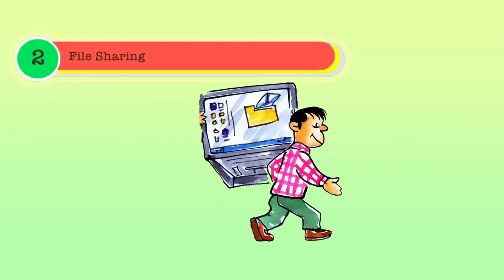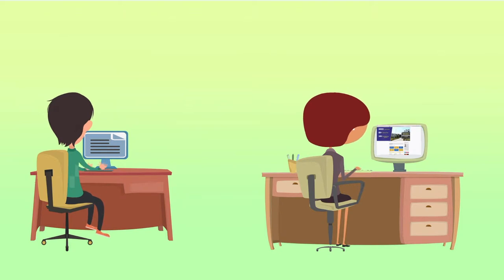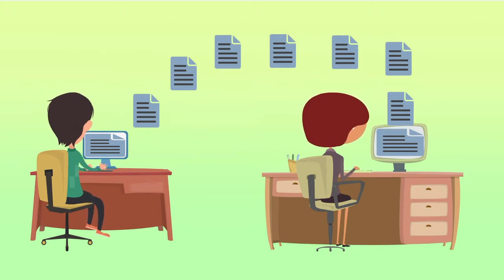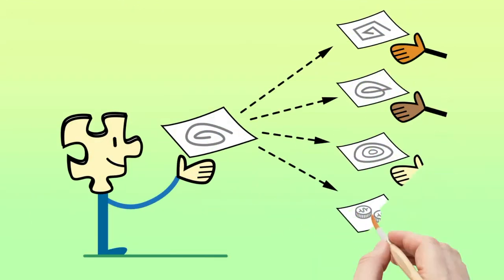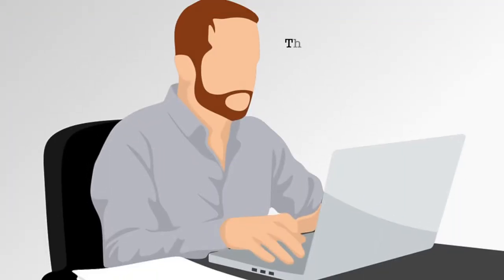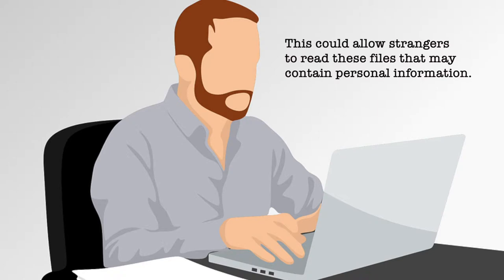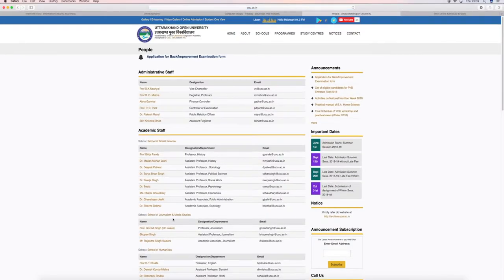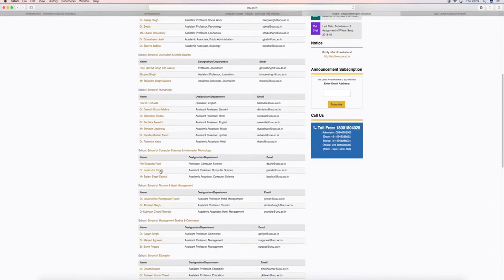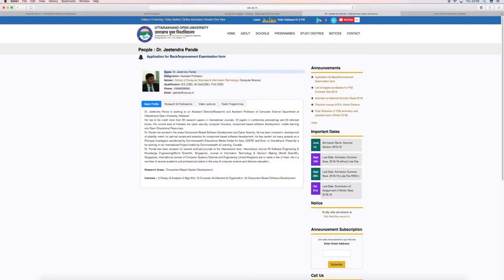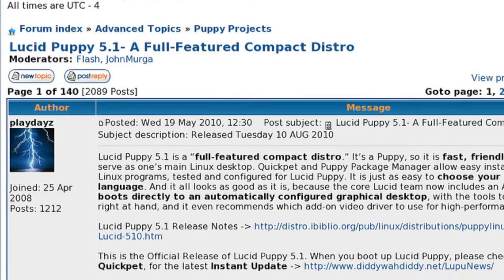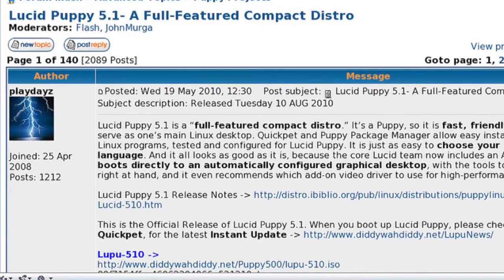The second issue is file sharing. Computers used by students or faculty may contain software that allows files to be accessible to other users on the campus network or outside without knowledge of the owner. Or they may allow files to be stored on a central server that are then accessible to others without their permission, allowing strangers to read files that may contain personal information. The third issue is school web pages and bulletin boards. Web pages maintained by the school, by faculty, or by students may contain personal information that may affect the privacy of others. Likewise, posting on bulletin boards or in other electronic forums may contain personal information of third parties for which no authorization has been given.